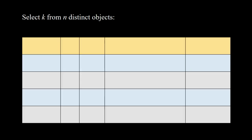Next we summarize four kinds of counting when we select k from n distinct objects. We will see their names, whether the order is important or not, whether repetition is allowed or not, their formula, and their conditions. The first one is arrangement: here the order is important, repetition is allowed, and the formula is n to the power k.